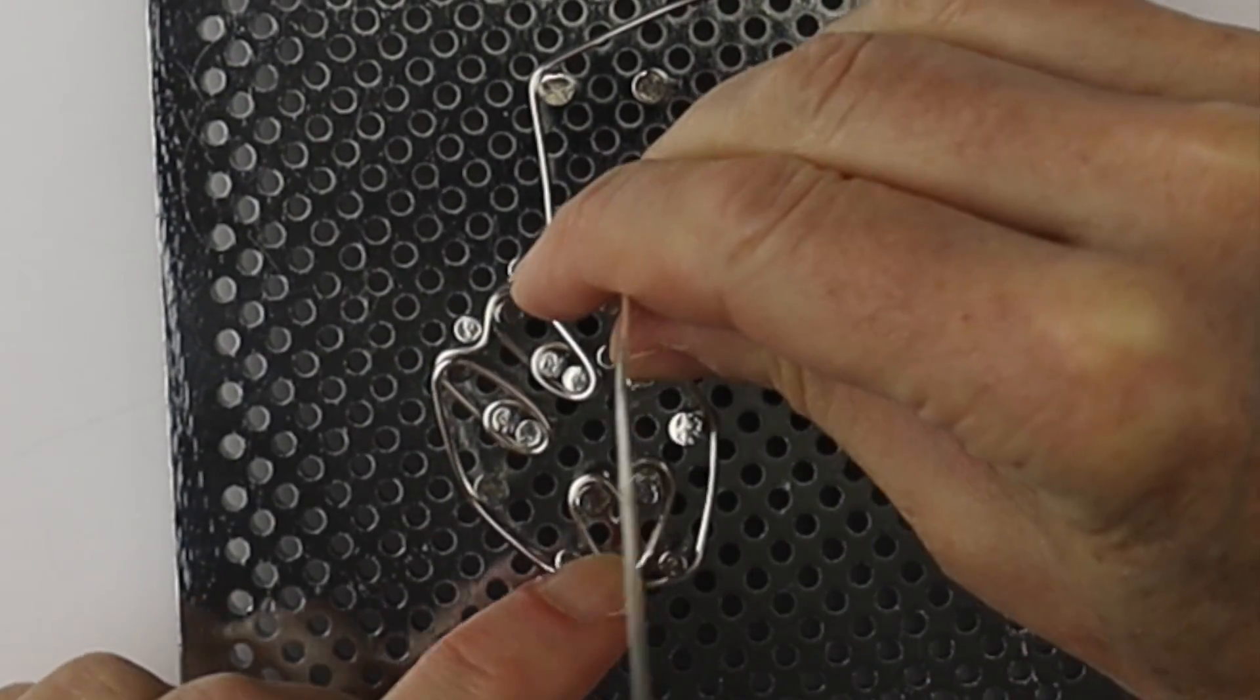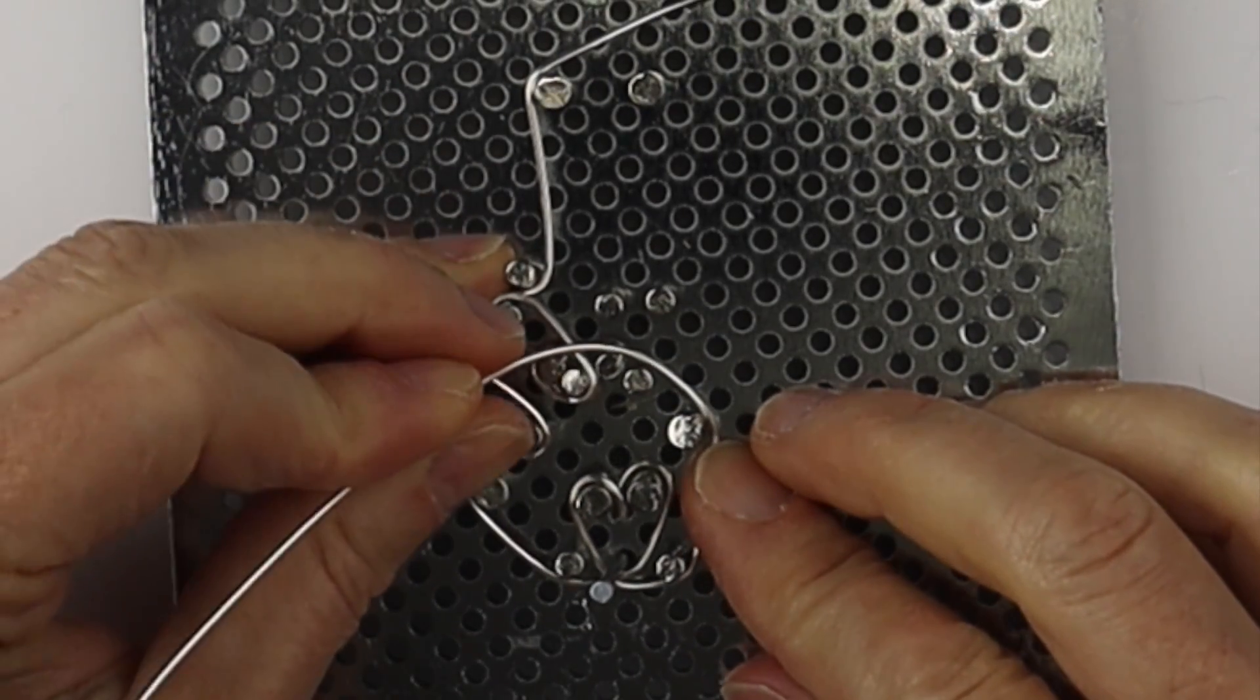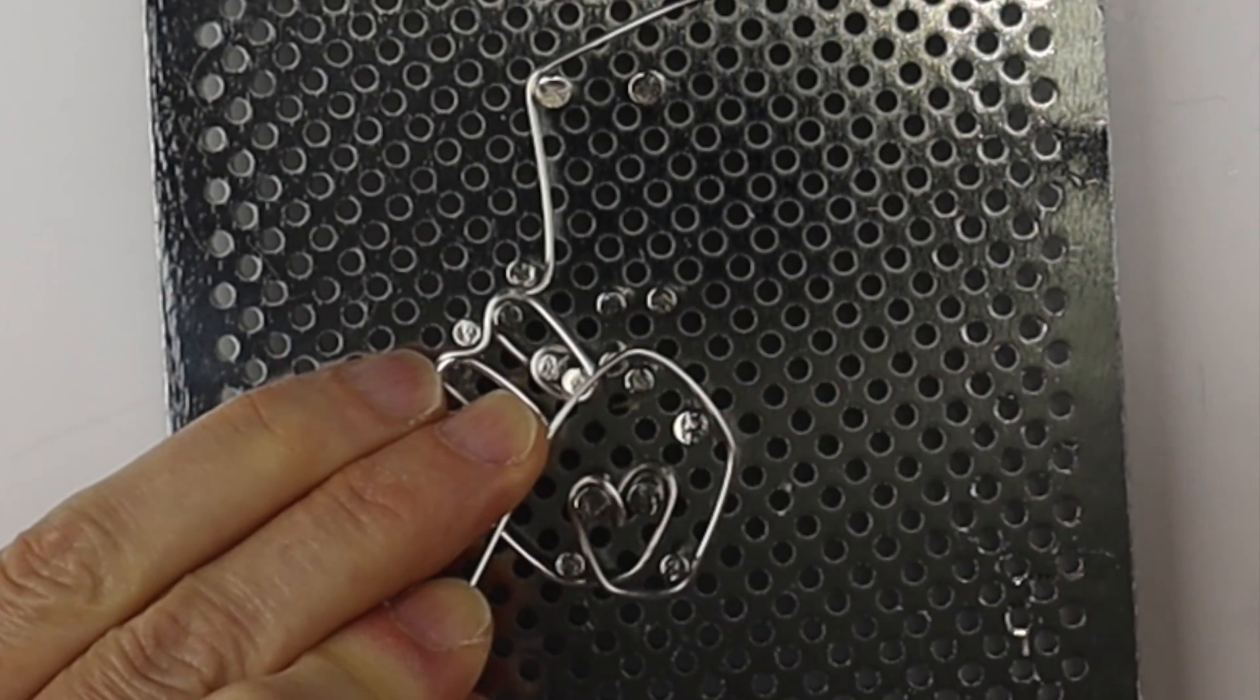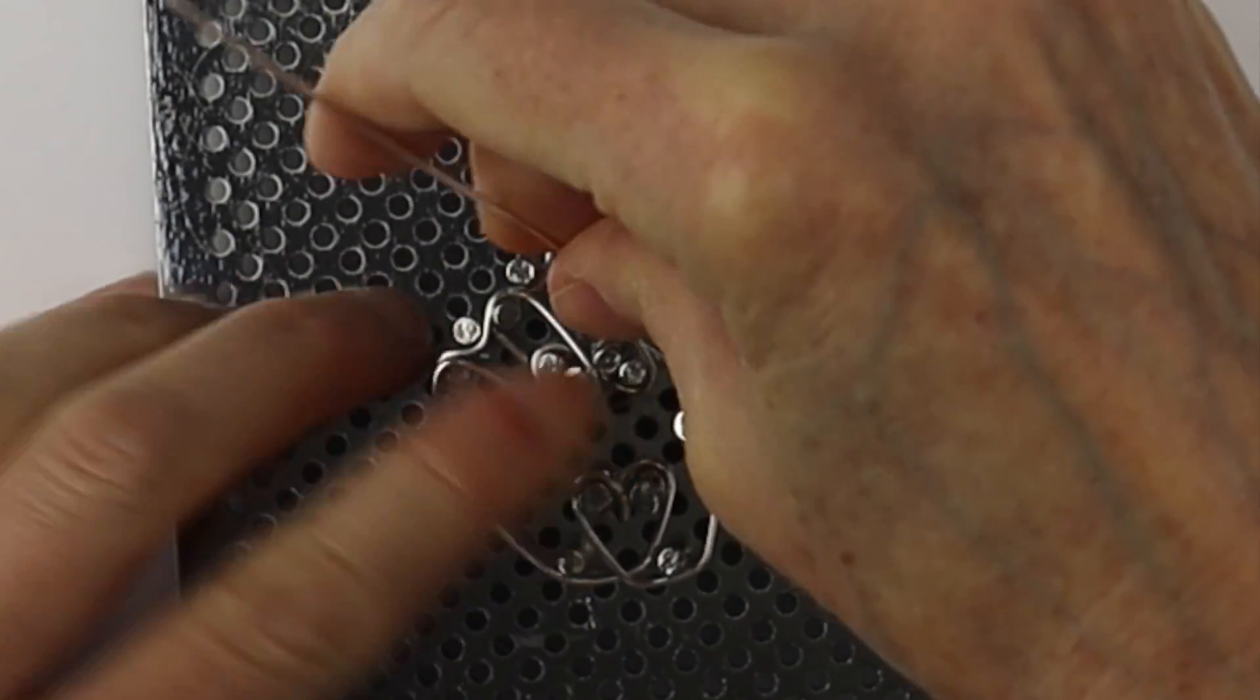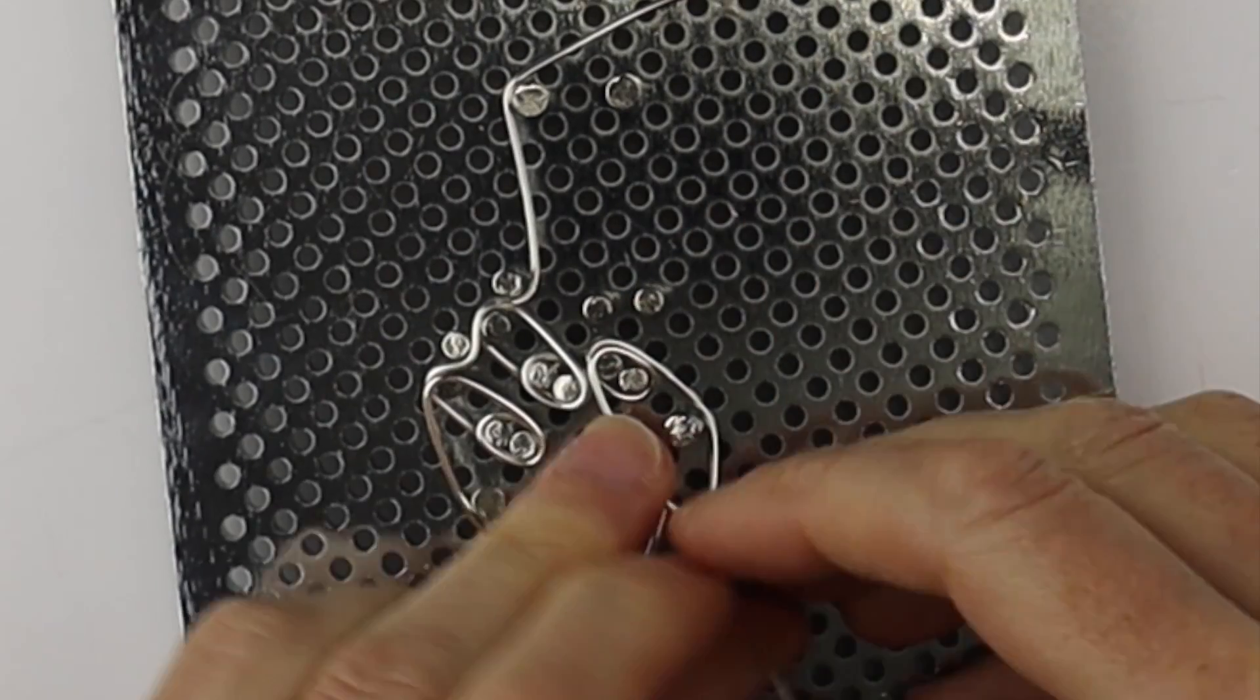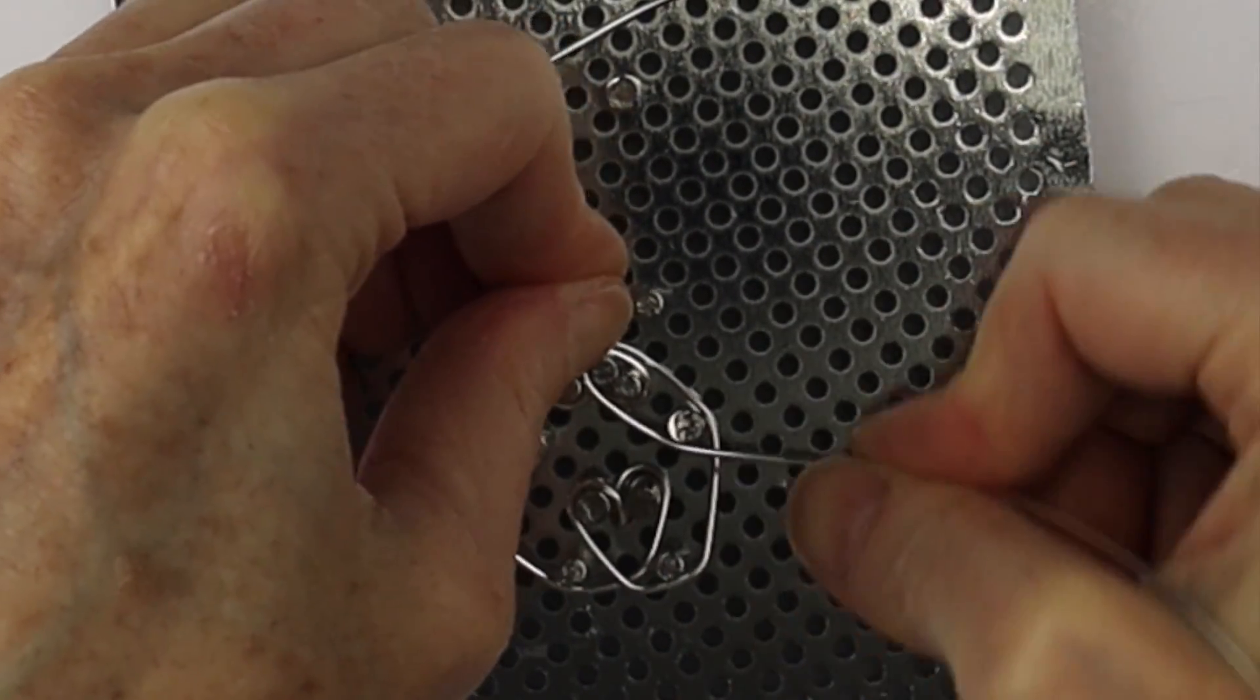Now we'll bring it up and form the thumb. So bring it around the pegs that will form the nail of the thumb. At that point, you could remove the nail and we're going to bring the wire around, loop it a full turn around and back down. So we have our thumbnail and the rest of the thumb.